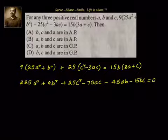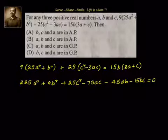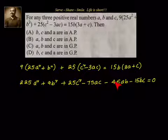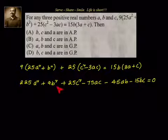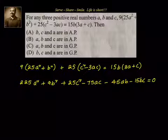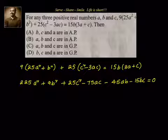Now we see 225a², which is nothing but (15a)²; 9b² is (3b)²; and 25c² is (5c)². We also have 15 into 5, 15 into 3, and 3 into 5 as cross-term coefficients. This seems to be fitting into one of the known algebraic identities — let us check that.